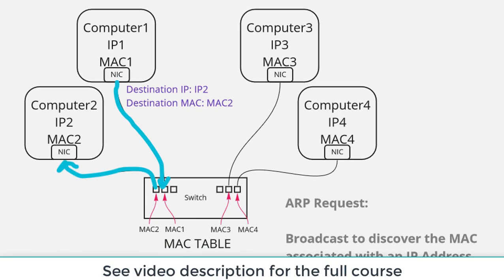A layer two broadcast is any Ethernet frame sent to a specific address called the broadcast address. That broadcast address informs the switch that the frame needs to be flooded out every single port. An ARP request is a great example of a broadcast.